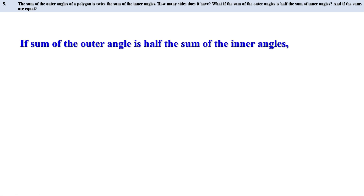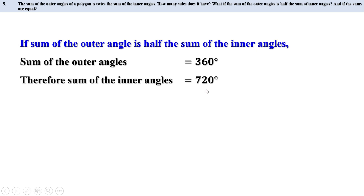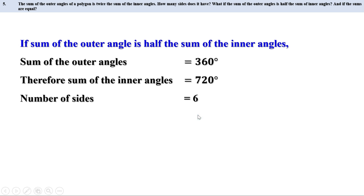Secondly, if the sum of the outer angles is half the sum of the inner angles: the sum of outer angles is 360 degrees, and 360 is half of 720, so the sum of inner angles is 720 degrees. The sum of inner angles of a hexagon is 720 degrees, so this polygon is a hexagon with 6 sides.